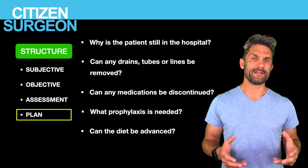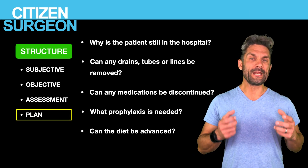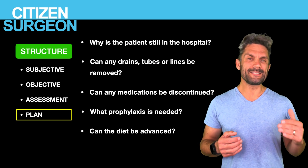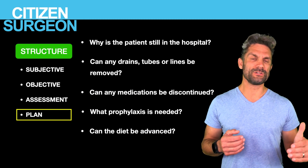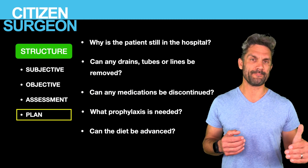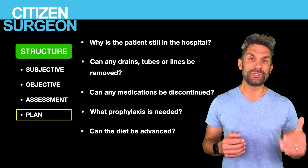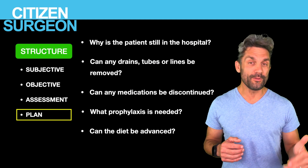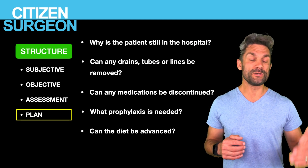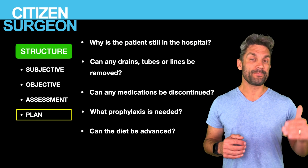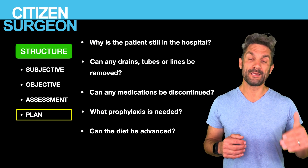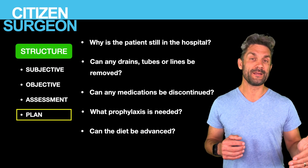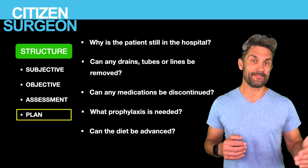The plan is where you put everything together including your action items. First, ask yourself: why is the patient still in the hospital? Second, can any drains, tubes, or lines be removed? Can you pull that nasogastric tube? Can you pull that Foley catheter? You should be asking yourself every day — can we take this out today? Especially with Foley catheters and catheter-associated urinary tract infections, the risk goes up every day that catheter's in place.